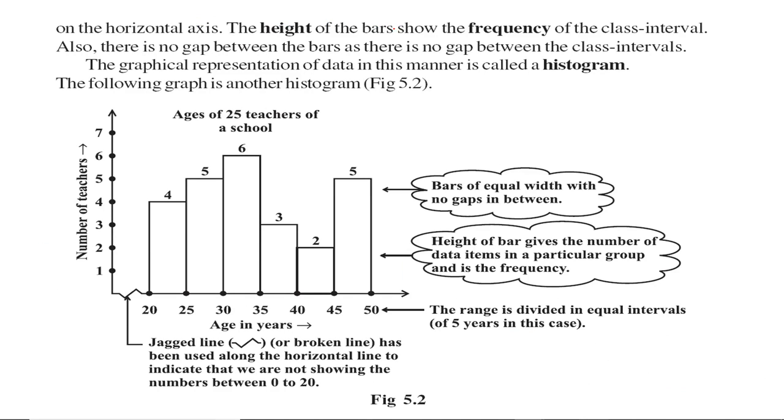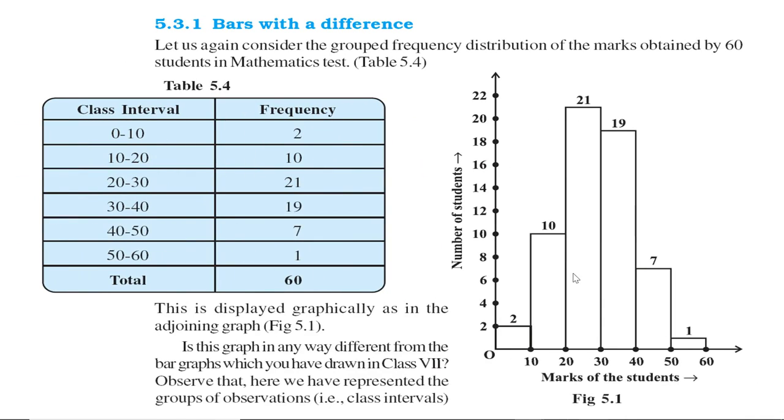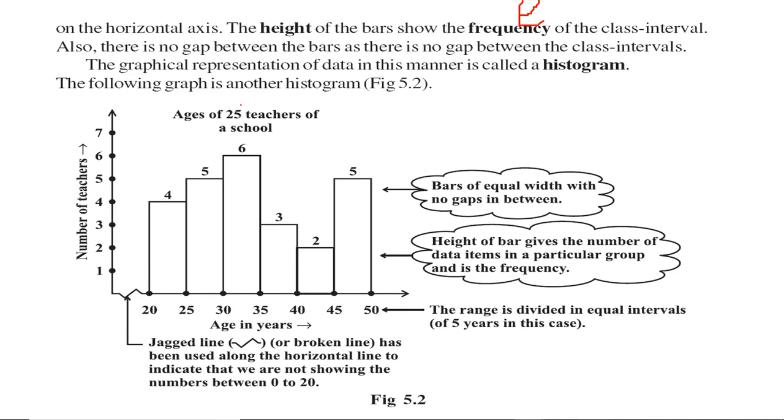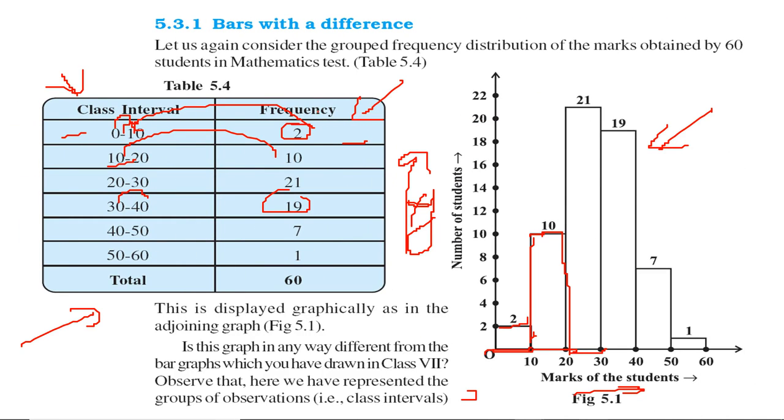The heights of the bars give the number of students in the class interval. See, there is no gap between these bars. There is no gap because 0 to 10, and then we start again from 10 to 20. This graphical representation of data in this manner is called the histogram. But this graph is something different. Here, the minor difference is we are not starting from zero. Previously in this frequency distribution table and graph, in both we started with zero.